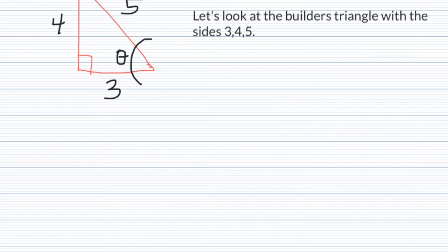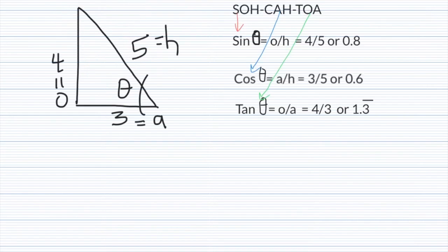Let's look at the builder's triangle with the sides 3, 4, and 5. In this case, the sine of θ, which is opposite divided by hypotenuse, is 4 divided by 5, which is the hypotenuse.